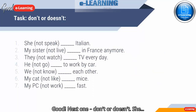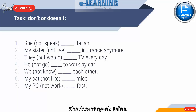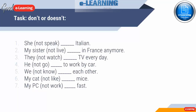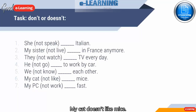Next one: don't or doesn't. She — she, he, it — takes doesn't. She doesn't speak Italian. My sister — she — doesn't live in France anymore. They — don't — watch TV every day. He doesn't go to work by car. We don't know each other. My cat doesn't like mice. My PC — it — doesn't work fast.